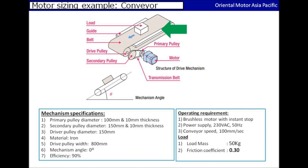If you do not know the value, this will be a rough guide for you. A value of 0.3 will be like finger rubbing on the metal cable. A value of 0.1 will be for rollers. And 0.05 will be the load on the ball bearing guide.